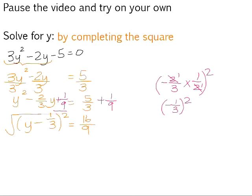We can now square root both sides. So plus minus, and we're left with y minus 1 third is equal to plus minus 4 over 3.